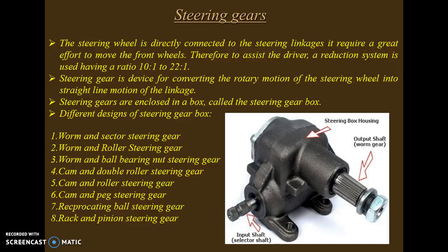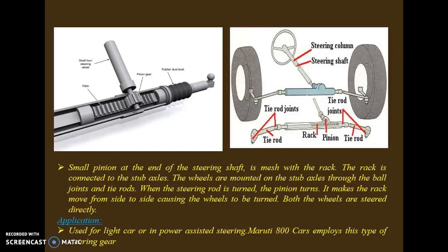One type of steering gear is the rack and pinion type. The steering column has a small pinion at the end of the steering shaft which meshes with the rack. The rack is connected to the stub axles. The wheels are mounted on the stub axle through ball joints and tie rods. When the steering wheel is turned, the pinion turns, making the rack move from side to side, causing the wheels to turn.